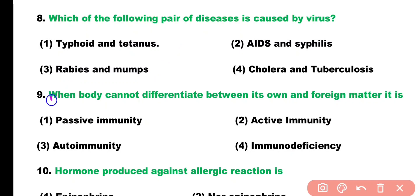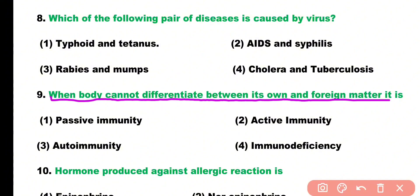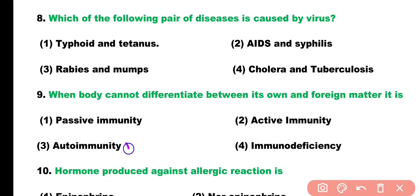Question number nine: when a body cannot differentiate between its own and foreign matter, it is called: passive immunity, active immunity, autoimmunity, or immunodeficiency. Correct answer is option three — autoimmunity is a condition when the body is unable to differentiate between its own and foreign tissue.